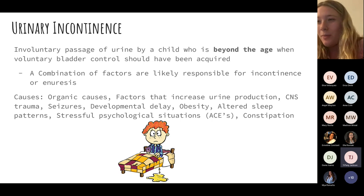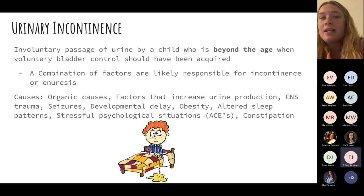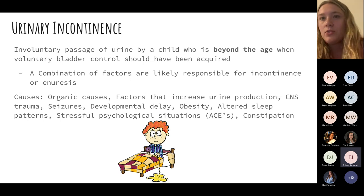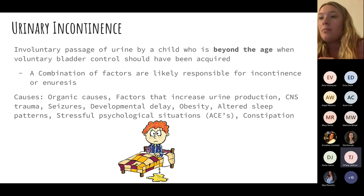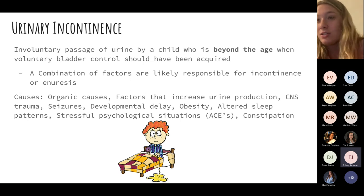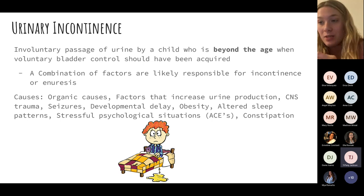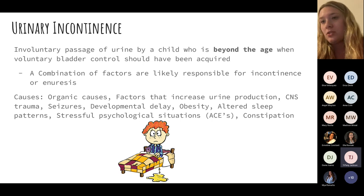Urinary incontinence is common in kids — bedwetting episodes — but when we classify it as urinary incontinence, it's when it becomes unacceptable. Many factors can contribute: the most common is simply drinking a lot. CNS trauma, seizures, or developmental delay can also be causes. Importantly, one of the first indicators of adverse childhood experiences (ACEs) is regression to bedwetting.